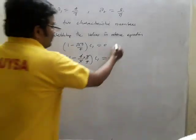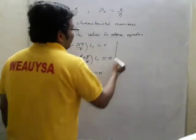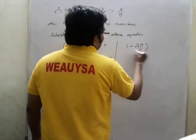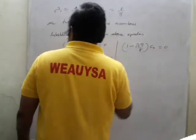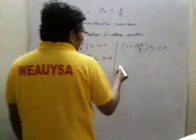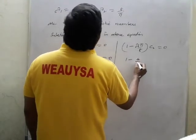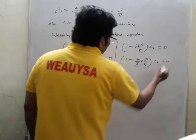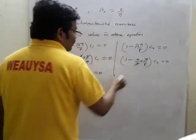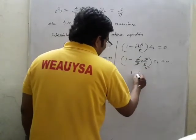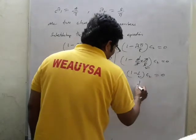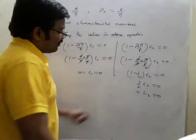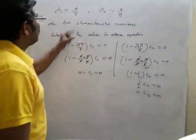We got c1 = 0. Similarly, substituting λ₁ into the second equation (1 - λπ/8)·c2 = 0: substituting 1 - (4/π)·(π/8)·c2 = 0 gives 1 - 1/2 = 1/2, so (1/2)·c2 = 0, meaning c2 is also 0. So for λ = 4/π, both c1 = 0 and c2 = 0.